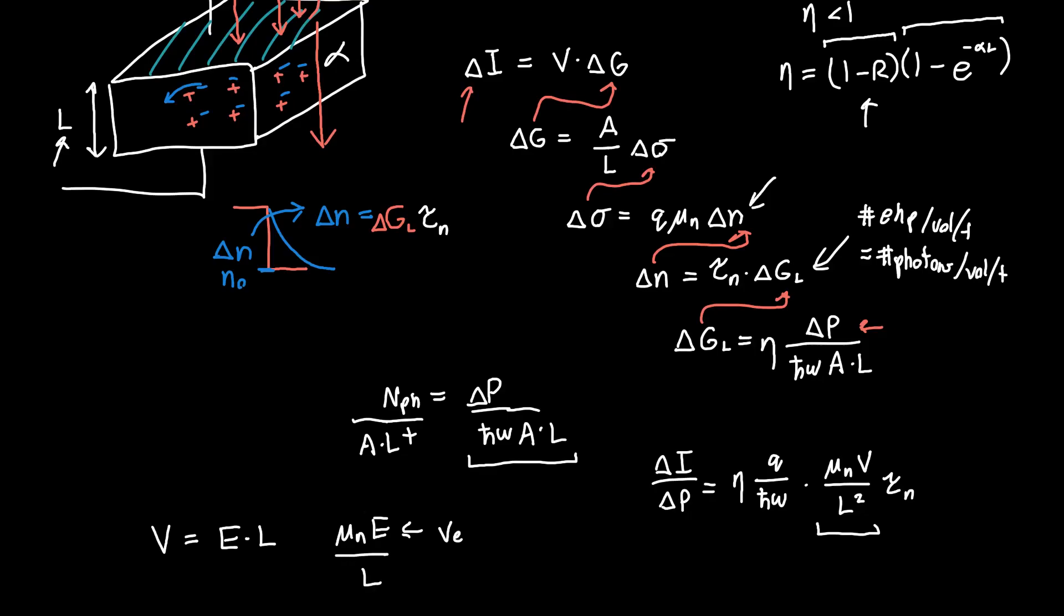So we have a velocity over the length that the electron has to travel, which is just one over the time it takes the electron to get from one side to the other side, from here to here.